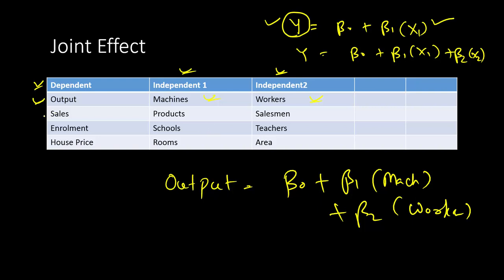The second example has sales as the dependent variable and products and salesman as independent variables. If you increase the number of products, that is not going to increase sales figures because we are not increasing the number of salesmen. Without increasing the number of salesmen, just increasing the number of products is not going to increase sales.